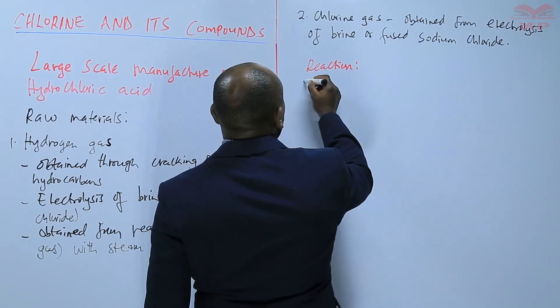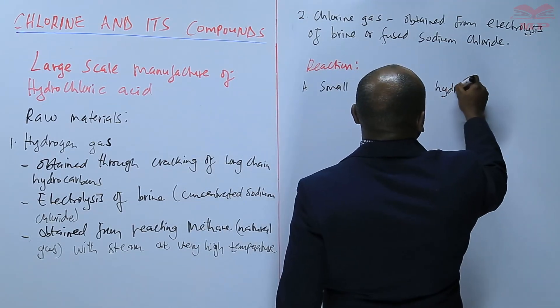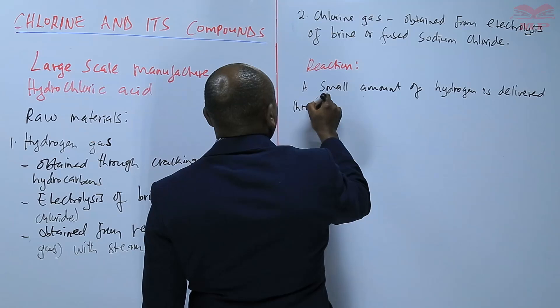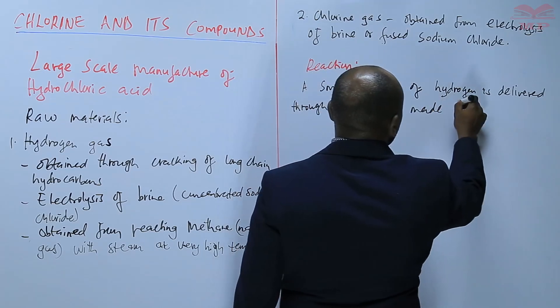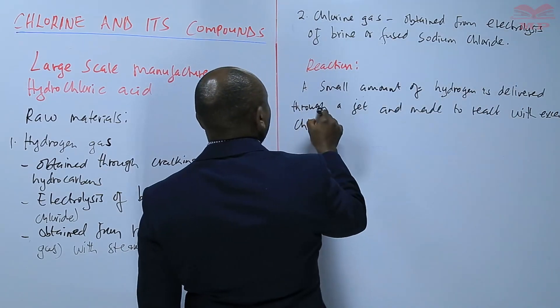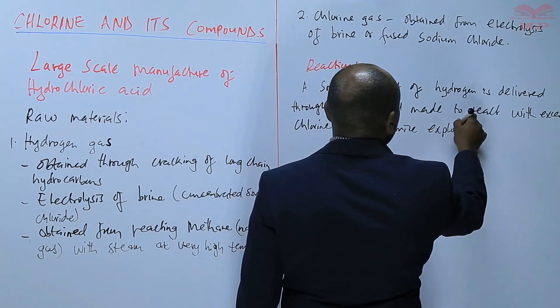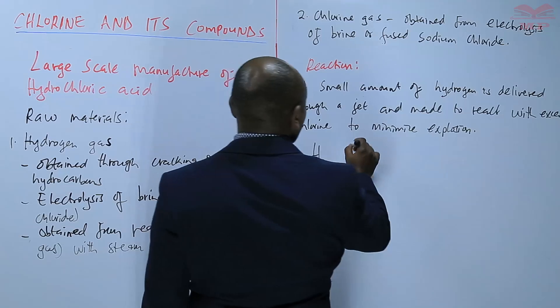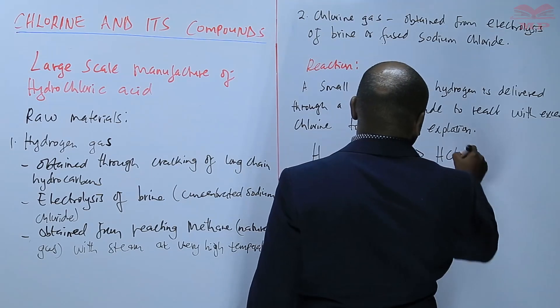So we are saying that a small amount of hydrogen is delivered through a jet and made to react with excess chlorine to minimize the chances of an explosion. So in this case, we have hydrogen, one of the raw materials, and chlorine is the other raw material. And then the two combine to form hydrogen chloride gas, HCl gas.